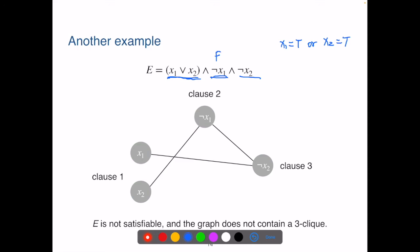If x1 is true, then not x1 will be false. If x2 is true, then not x2 will be false. Then one of those two clauses will be false. So E is not satisfiable.